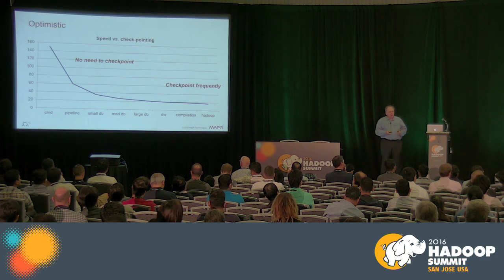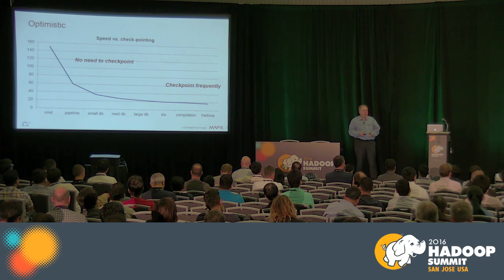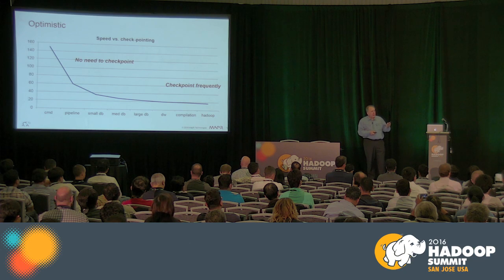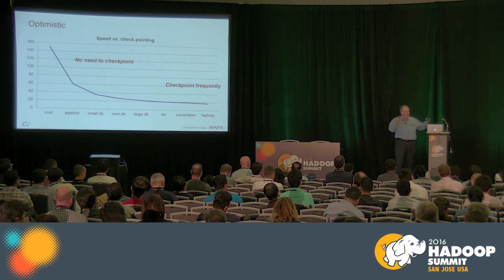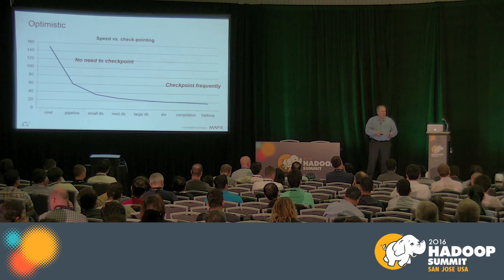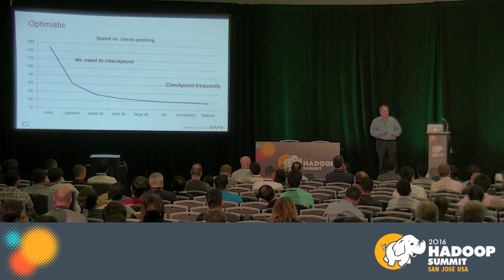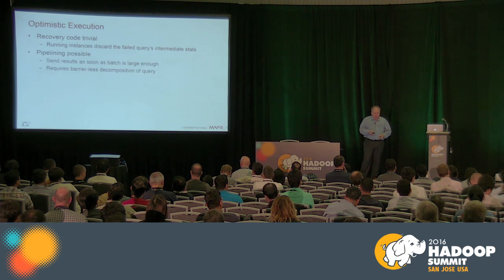Drill is optimistic — it doesn't worry about checkpointing because most drill queries are relatively fast relative to the mean time to interrupt. Typical cluster sizes are a thousand nodes or less, typically having less than 50,000 cores, with an average operational time of something like 500,000 core hours. Most queries will run much less than that, so the probability of getting interrupted is low, making the value of aggressive checkpointing very, very low. The longest Drill queries typically run at around tens of hours — a very modest number of CPU core hours. Recovery is therefore very simple: just resubmit the query.